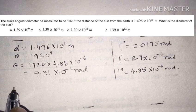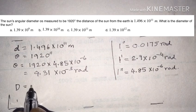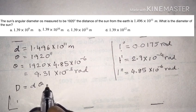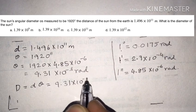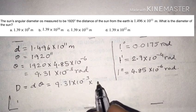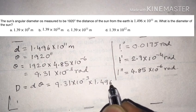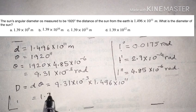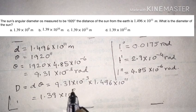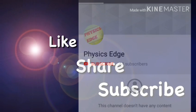The diameter D of the sun equals d multiplied by theta. Substituting: 9.31 into 10 power minus 3 multiplied by 1.496 into 10 power 11, giving a value of 1.39 into 10 power 9 meters. So the correct answer is option A.